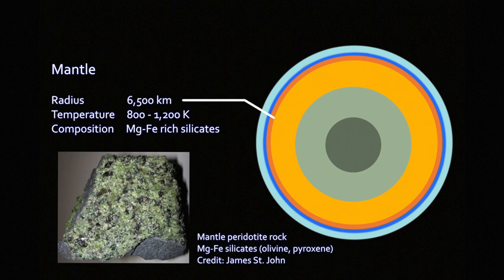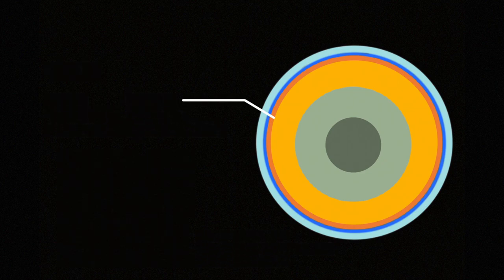The radius of the mantle is about 6,500 kilometers. The temperature ranges from about 800 kelvins in the outer layers of the mantle to 1,200 kelvins or so as you go further in.